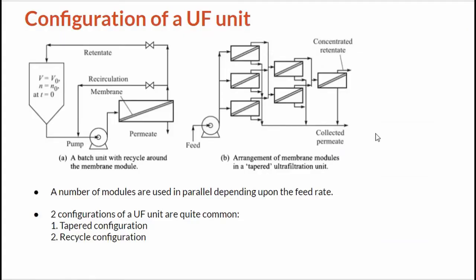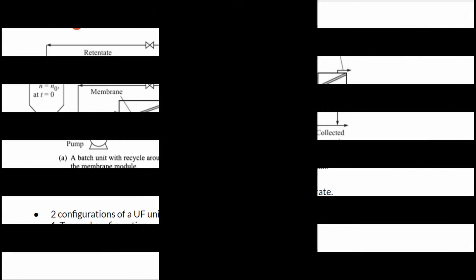Now we resume with the configuration of an ultrafiltration unit. In the figure, two configurations which are quite common are shown: the tapered configuration and the recycle configuration. In a recycle configuration, a part of the retentate stream is recycled back to the inlet of the module to achieve a higher concentration of the retentate. The strategy also increases cross flow velocity and thereby reduces membrane fouling. In the other configuration, the modules are arranged in parallel series pattern. Since the retentate volume decreases after the liquid passes through module, a lesser number of modules is provided in the successive stages.